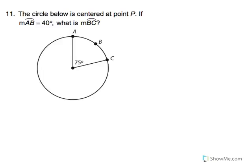Number 11. The circle below is centered at point P. If the measurement of arc AB is 40 degrees — let's label AB as 40 degrees — what is the measurement of arc BC? Let's call that X.